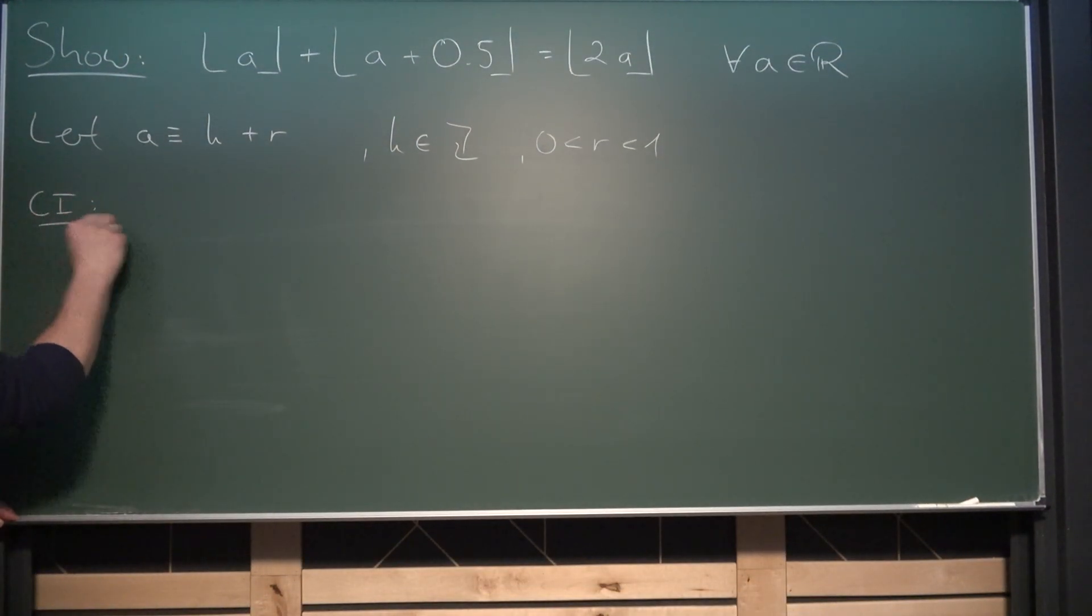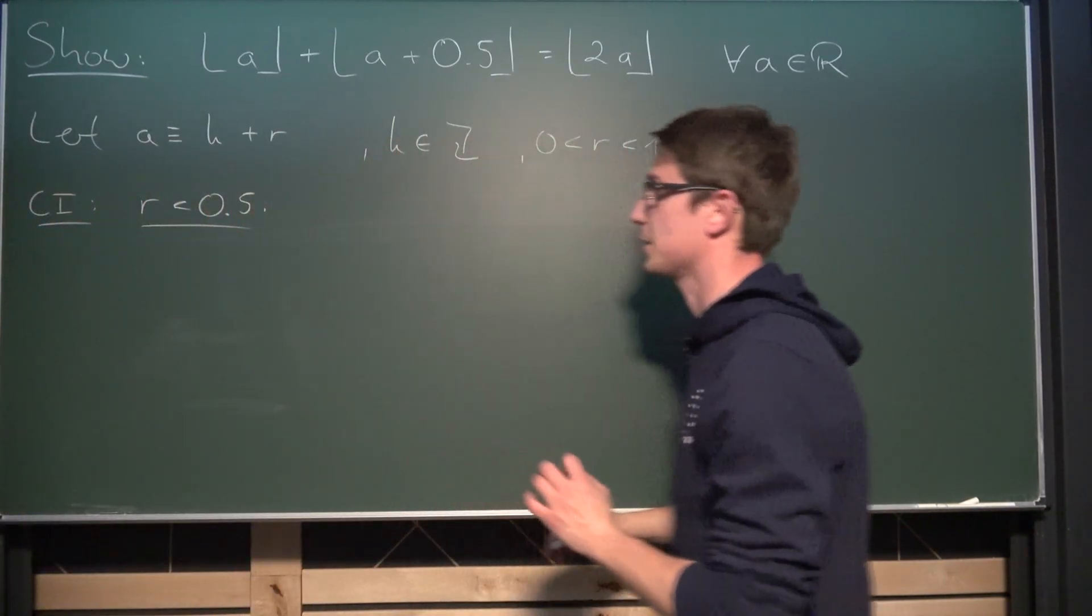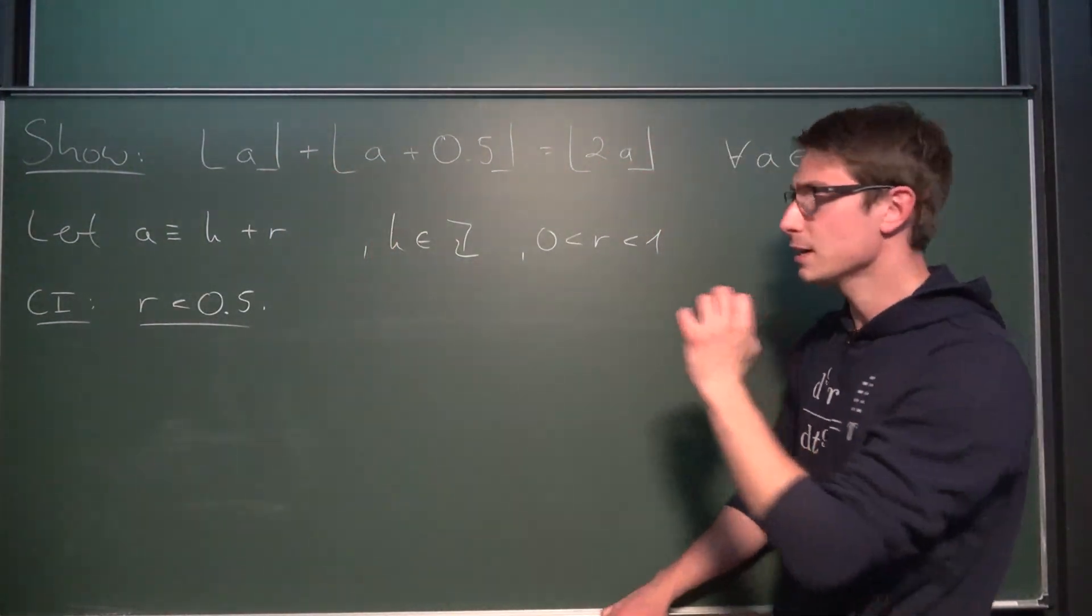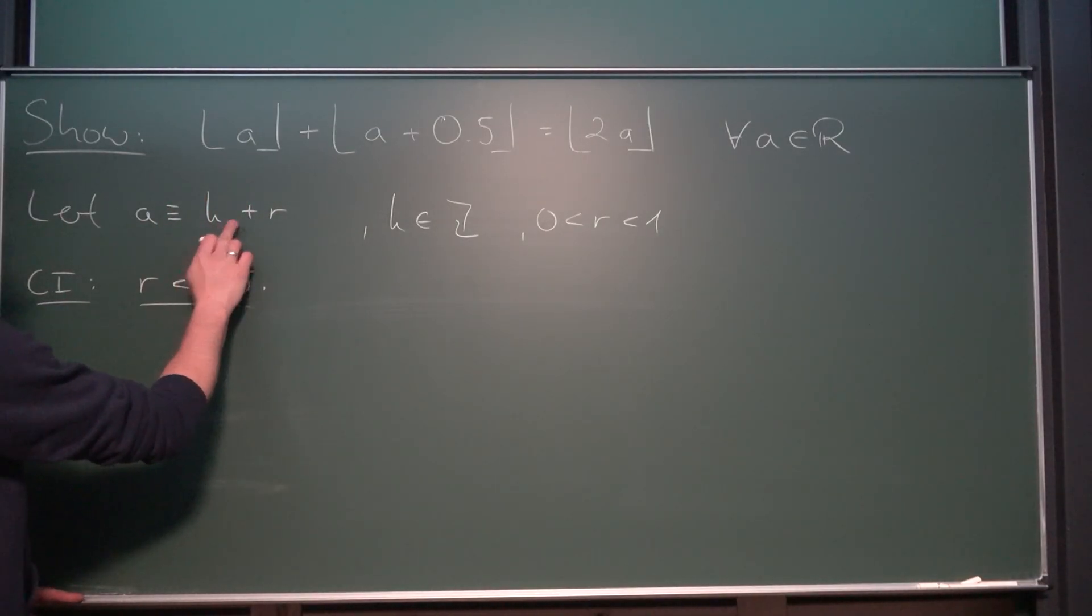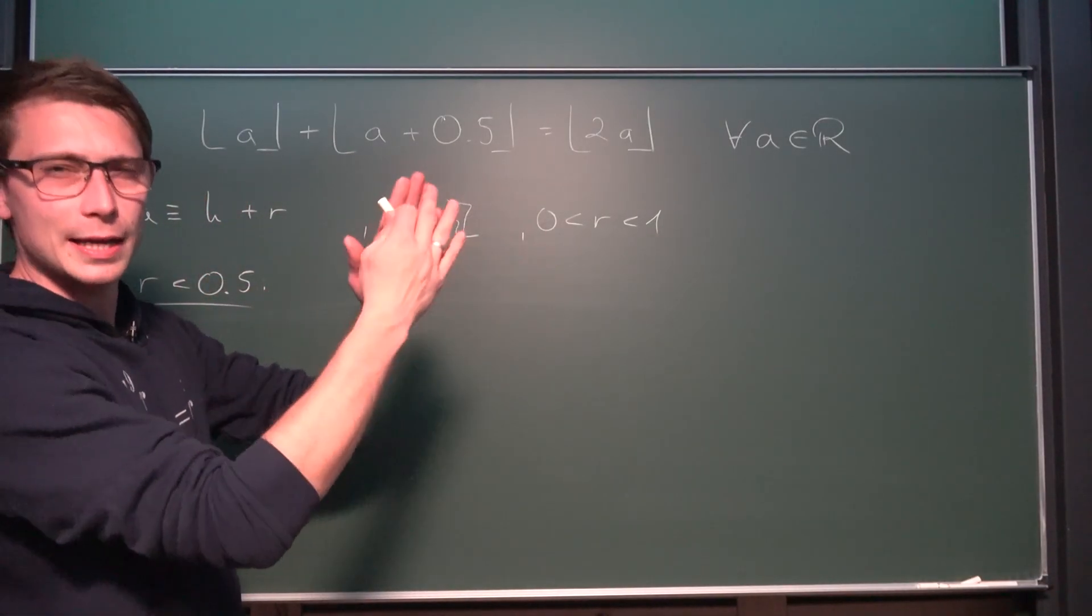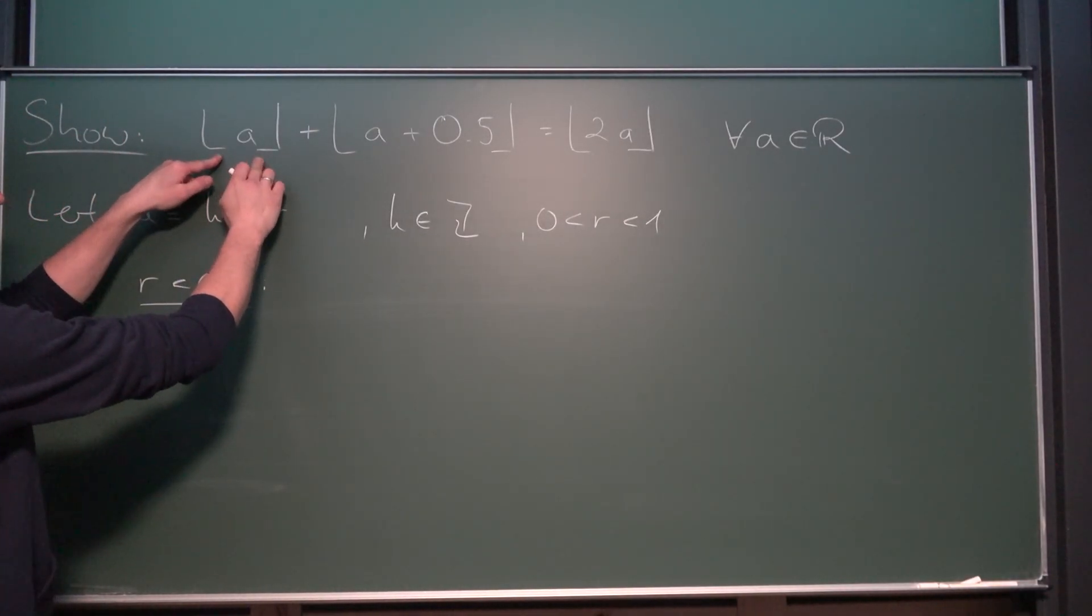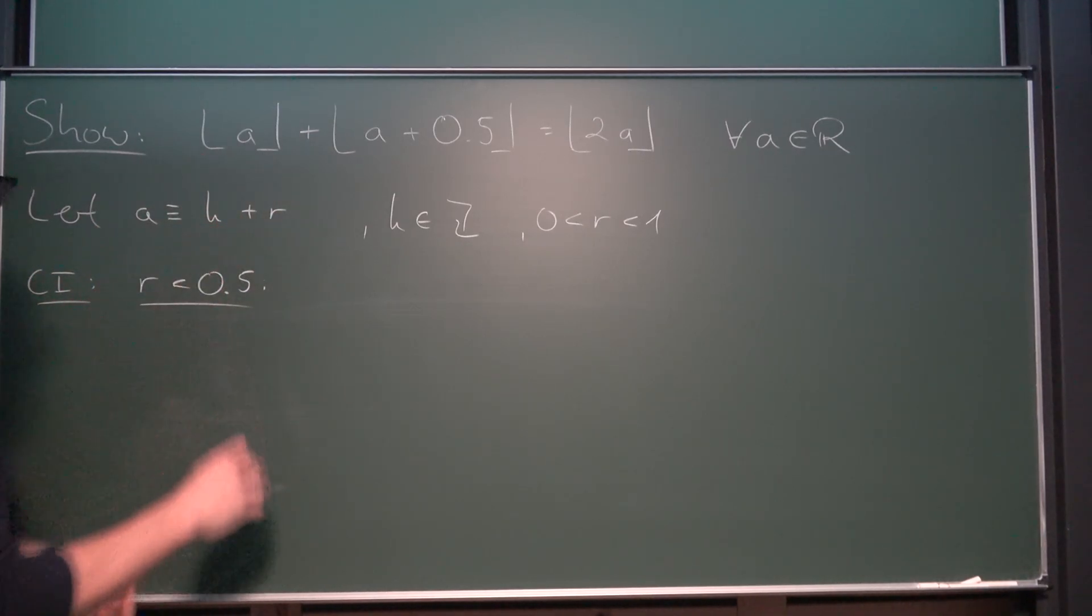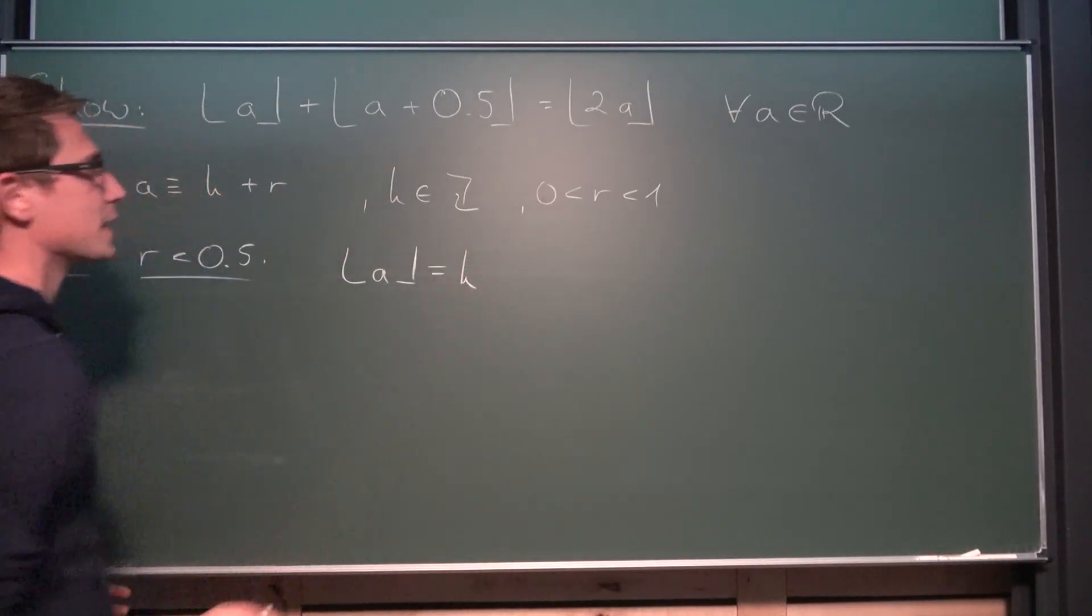Case number one is going to be r is less than 0.5. So what is going to happen here exactly? Then we are going to take a look at the floor of A at first. The floor of A is the same as, in this case, k plus something less than 0.5. It really doesn't matter for this case what the first one right here actually is. But no matter what we do, we are going to round down to k overall. So the floor of A is going to evaluate to k overall.